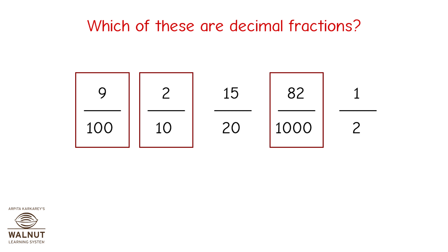So, 3 fractions are decimal fractions: 9 upon 100, 2 upon 10, and 82 upon 1000.